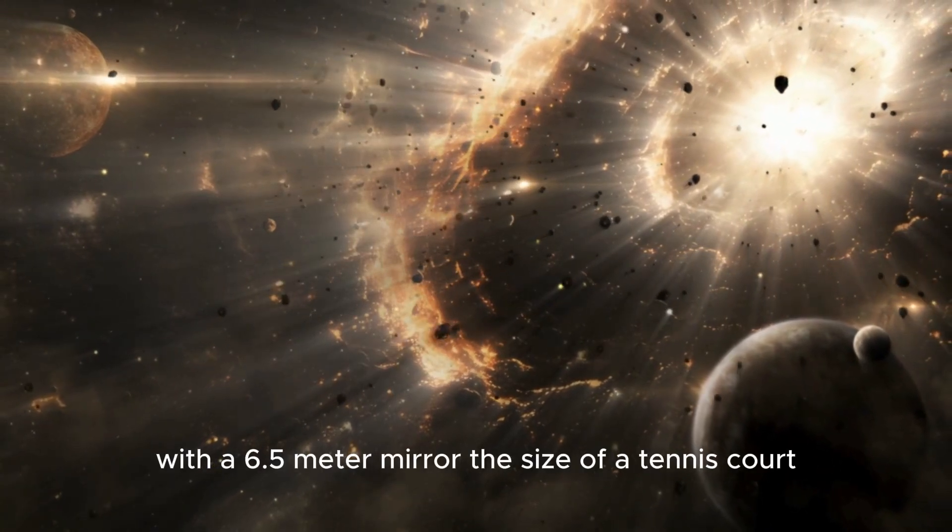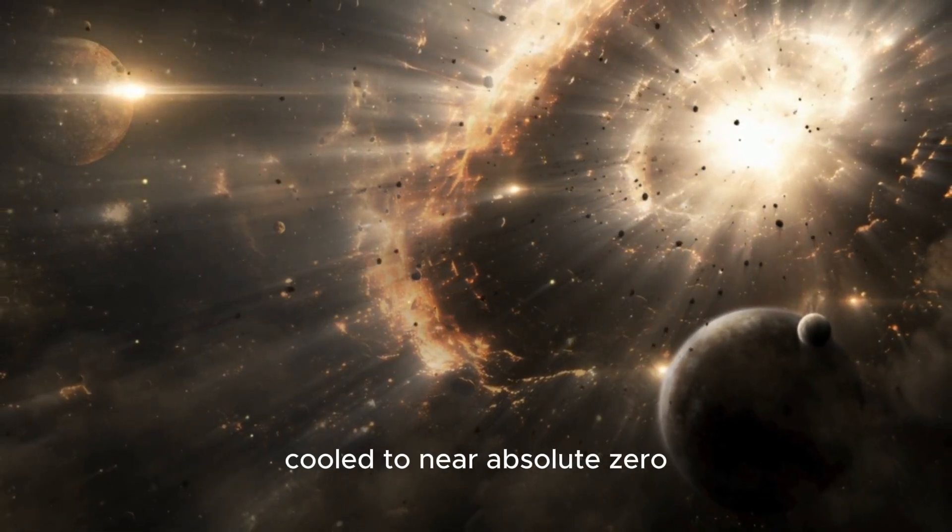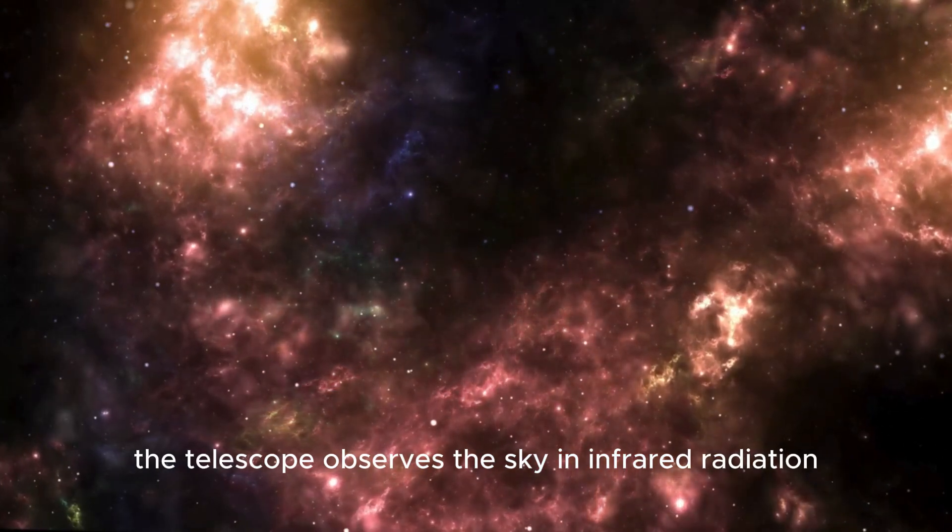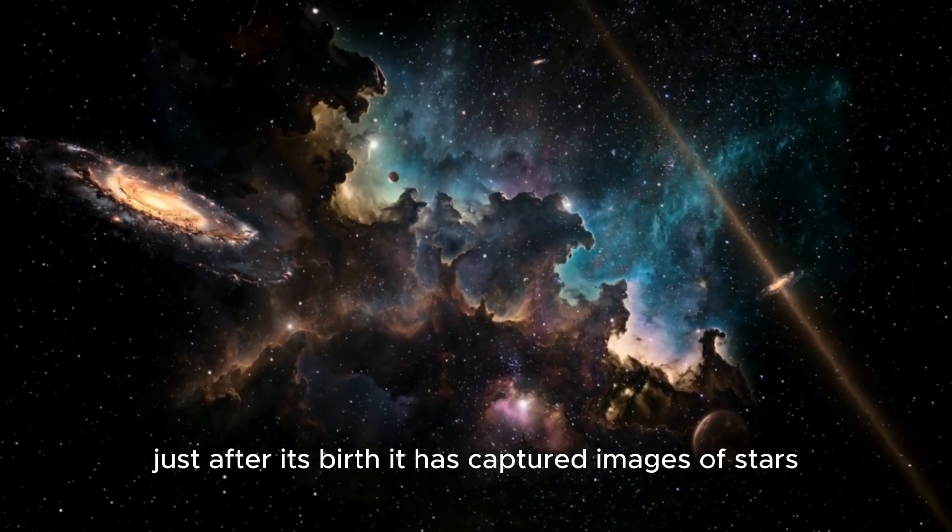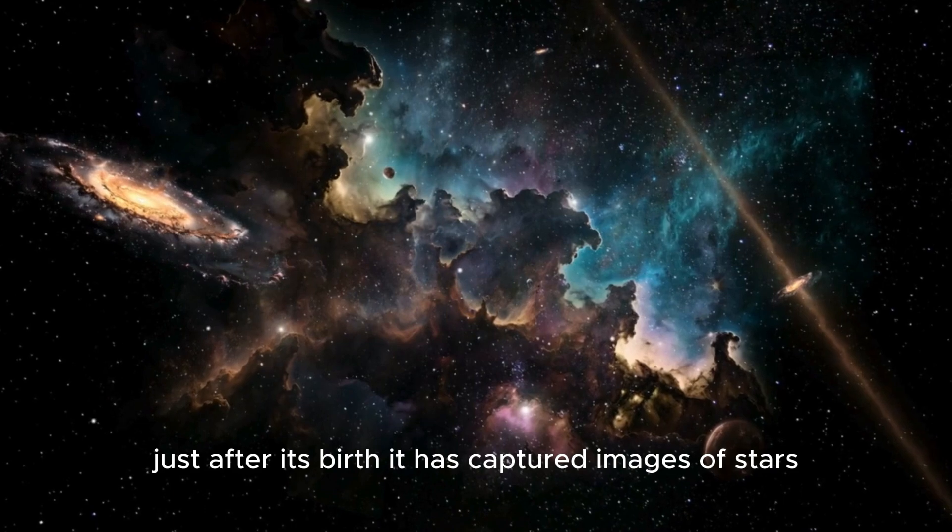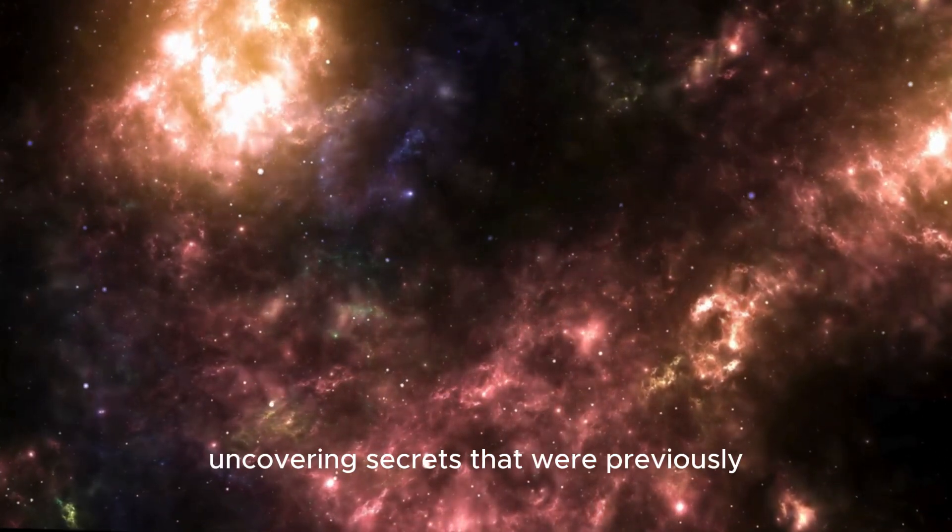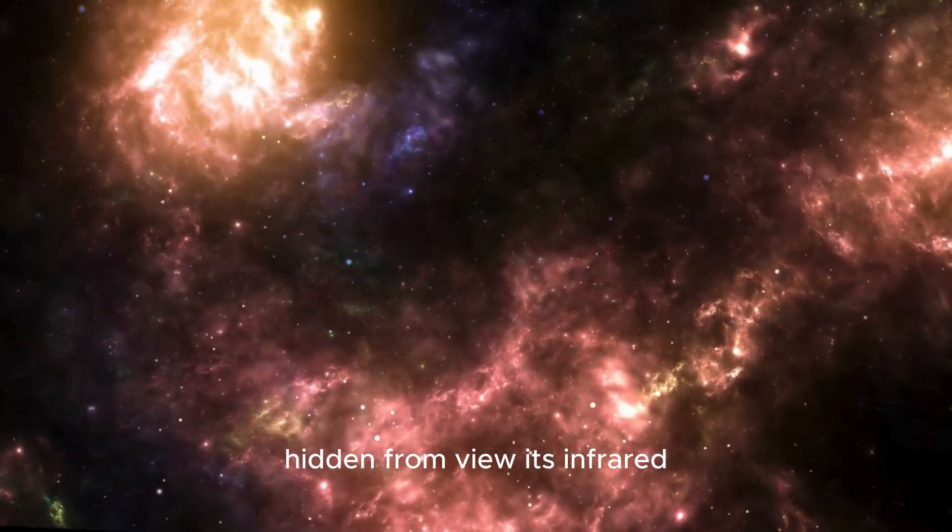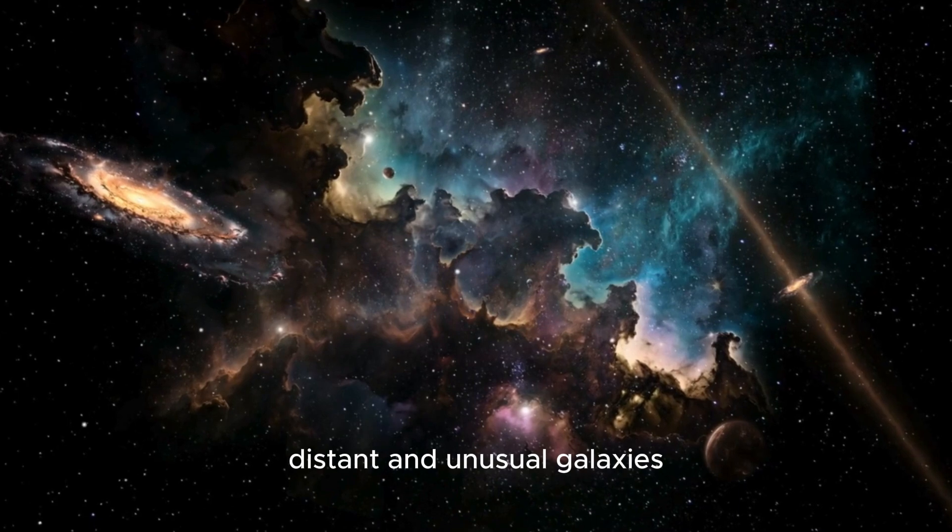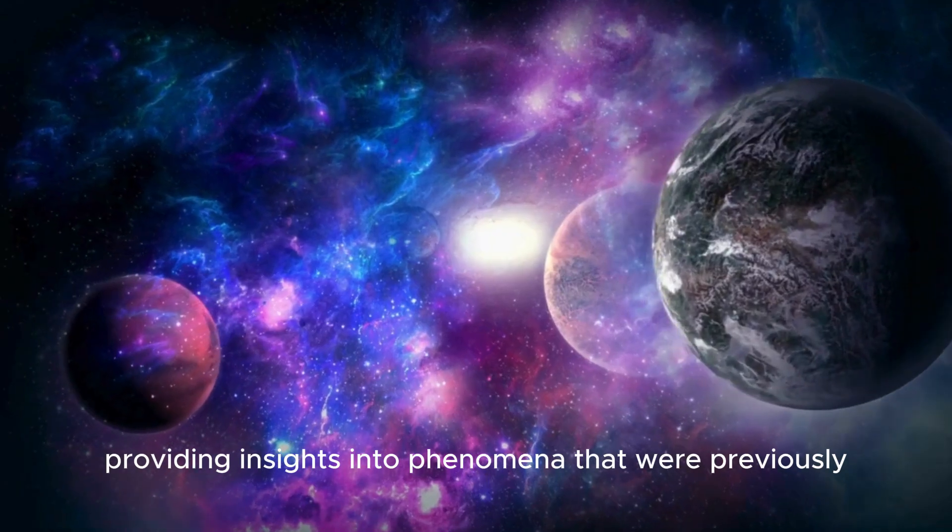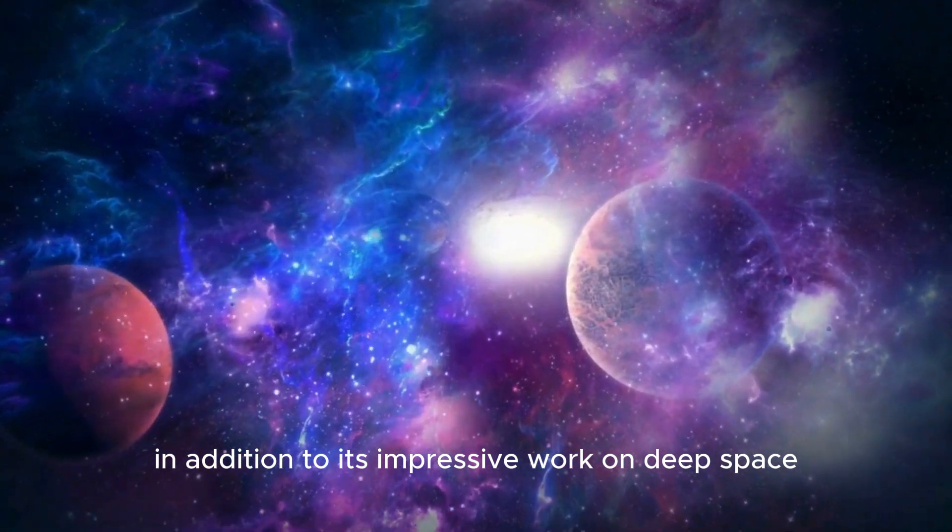James Webb's achievements have far exceeded our expectations. With a 6.5-meter mirror the size of a tennis court and a sophisticated array of instruments cooled to near absolute zero, the telescope observes the sky in infrared radiation, revealing details about the universe just after its birth. It has captured images of stars forming in dusty nebulae and gathered faint light from the farthest reaches of space, uncovering secrets that were previously hidden from view. Its infrared instruments are particularly useful for studying distant and unusual galaxies, providing insights into phenomena that were previously beyond our reach.